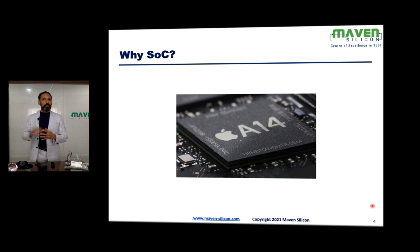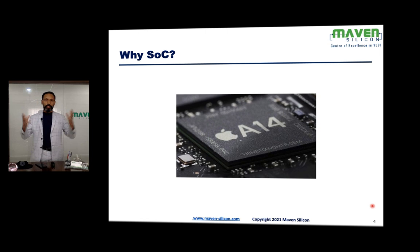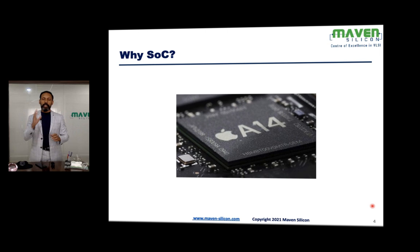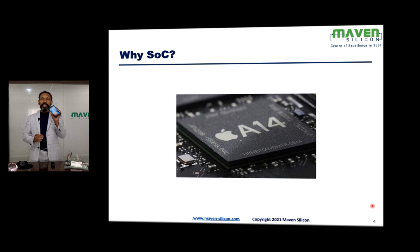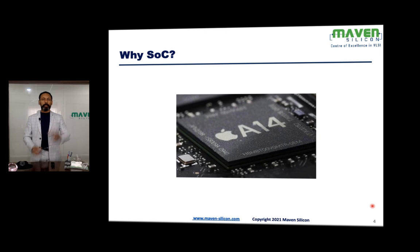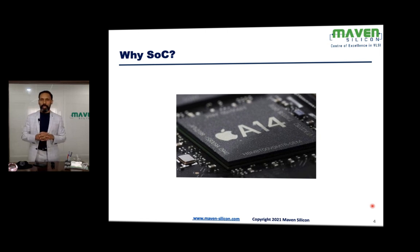If you don't have the option of system on a chip, then you try to put all the chips on a PCB. Then it's going to be bulky. You might not be able to make something like a smartphone because it has to be highly portable. If the PCB is going to be bulky, then we might not be able to realize devices like smartphones.